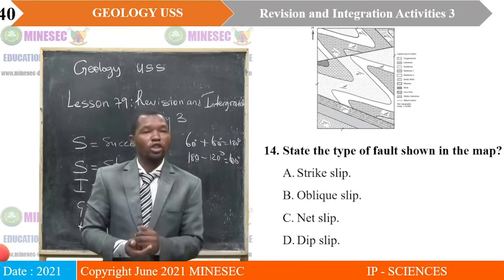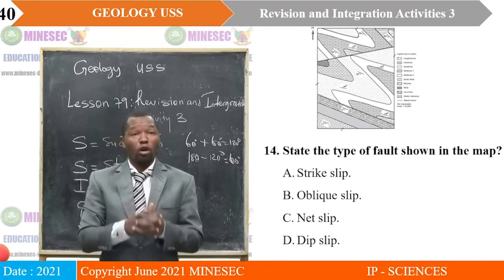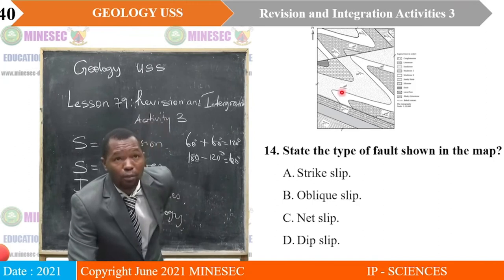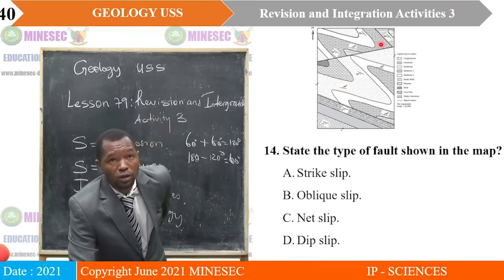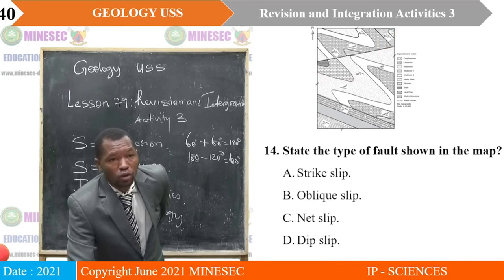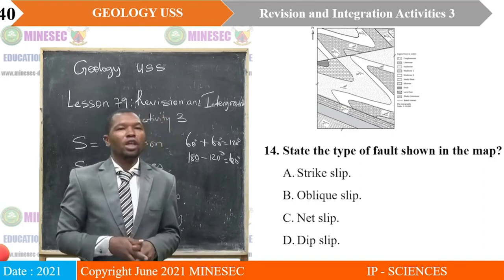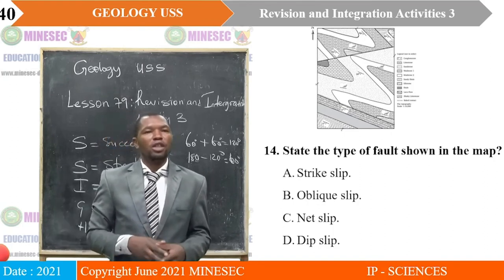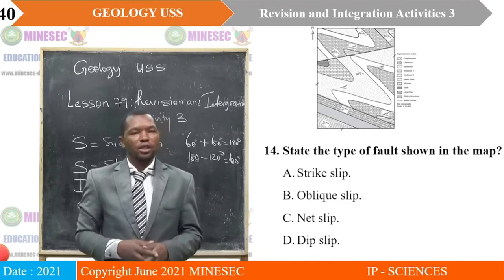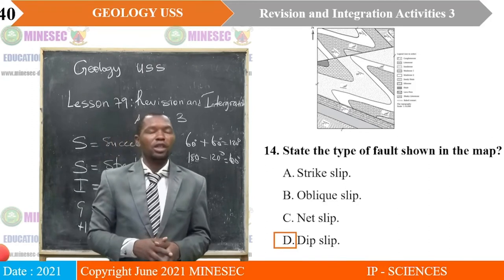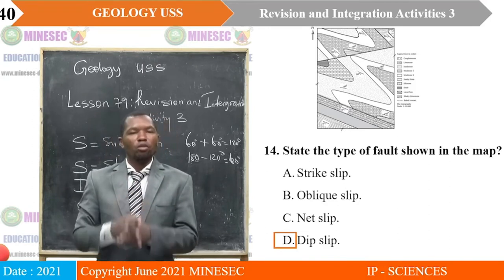Question 14: State the type of fold shown in the map. This is a fold with visible displacement on a fold. A — strike-slip; B — oblique-slip; C — net-slip; D — dip-slip. The correct answer is D — it is a dip-slip movement.